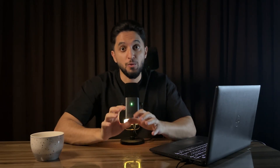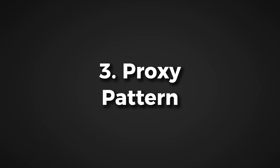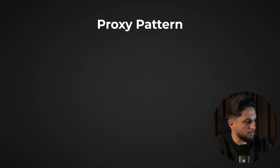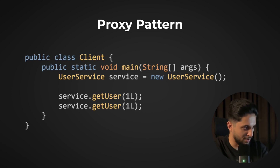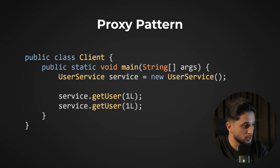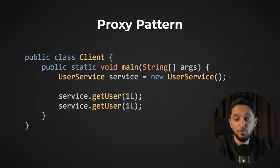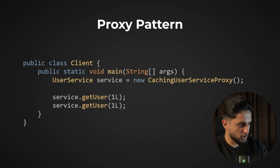The third pattern is responsible for controlling access to an object and adding behavior to it without touching the class — it's called the proxy pattern. The proxy acts as an intermediary between the client and the real object. Without a proxy, a client class creates a user service and calls getUserById twice consecutively, which hits the database twice. With the proxy, the same client still uses the UserService interface but has a new implementation called CachingUserServiceProxy.